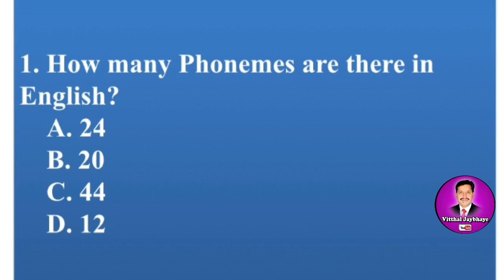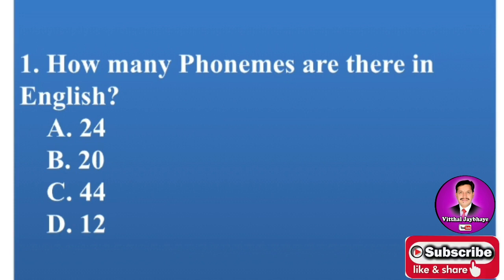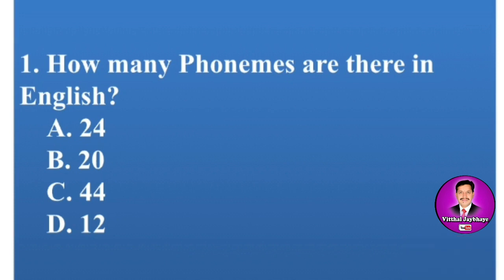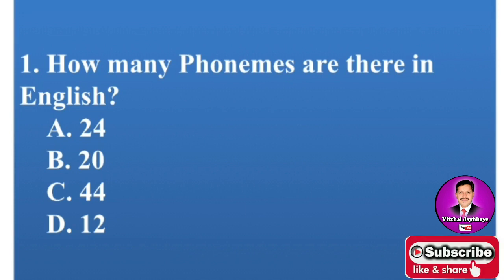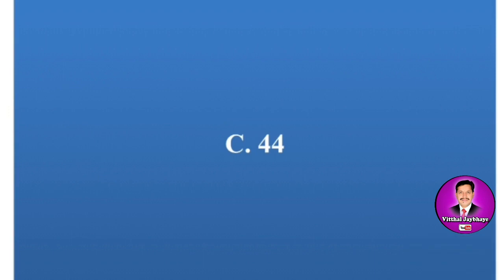This is the first MCQ: How many phonemes are there in English? Options are A: 24, B: 20, C: 44, D: 12. The correct answer is C — there are 44 phonemes in English.